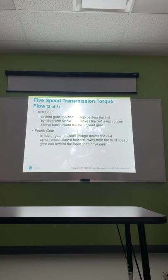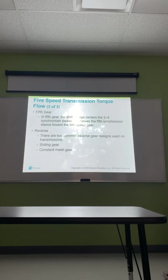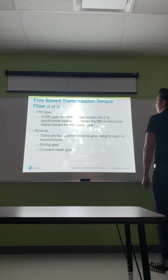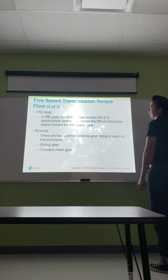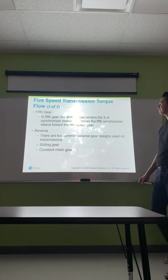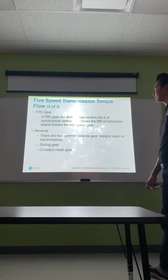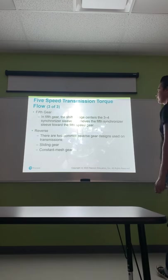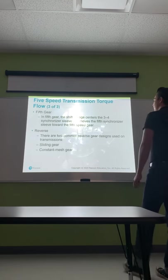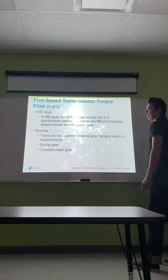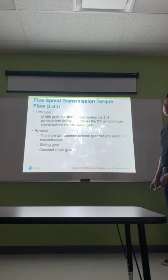In fourth gear, the shift linkage moves the 3-4 synchronized sleeve forward away from third speed gear toward the input shaft drive gear — that's direct drive. In fifth gear, the shift linkage centers the 3-4 synchronized sleeve and moves the fifth synchronized sleeve toward the fifth speed gear. In reverse, there are two common reverse gear designs: a sliding gear and a constant mesh gear.